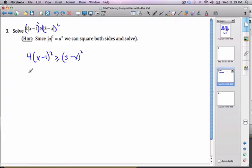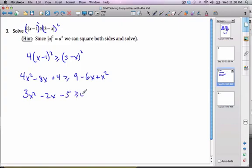Doing some algebra now, I get 4x squared minus 8x plus 4, bigger than or equal to 9 minus 6x plus x squared. Bring everything to one side, I get 3x squared minus 2x minus 5 is bigger than or equal to 0.